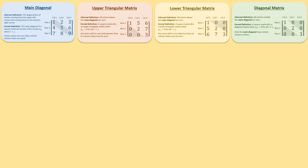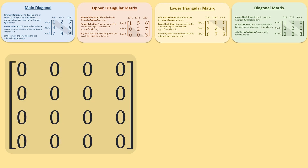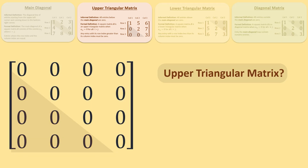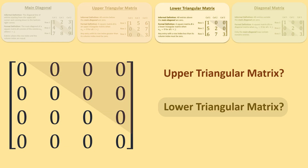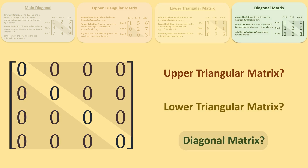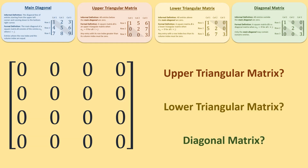In the comments below, let me know: is a square matrix with all zeros considered an upper triangular, lower triangular, or diagonal matrix? If you found this content helpful, consider subscribing, commenting, or liking the video to support the channel.